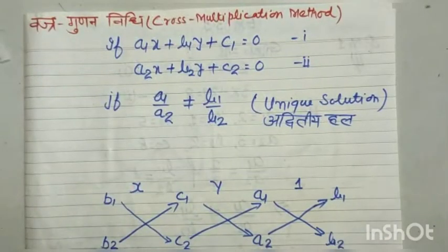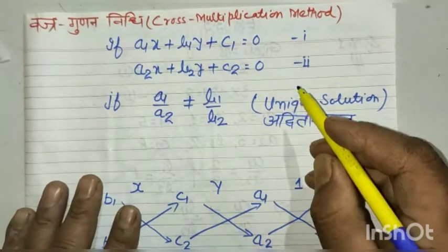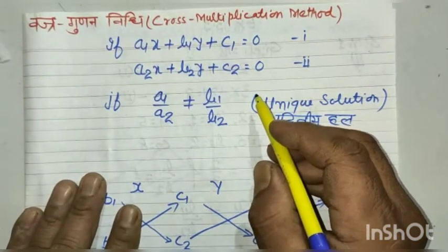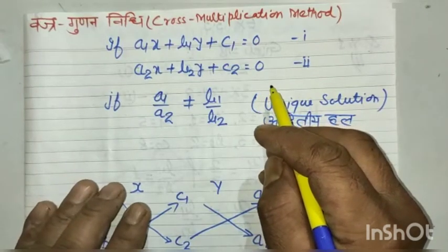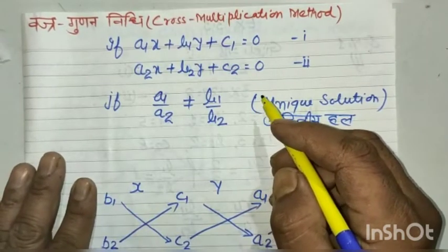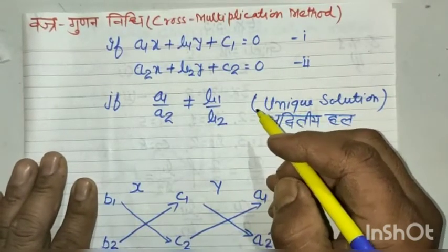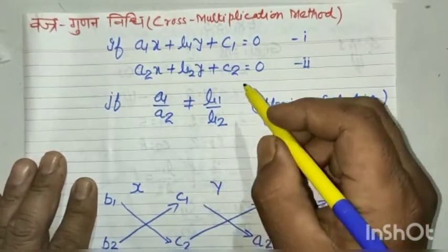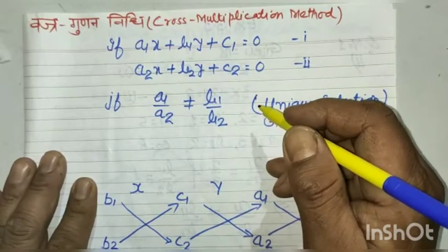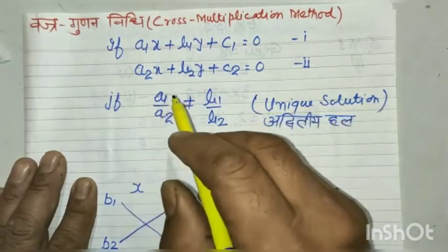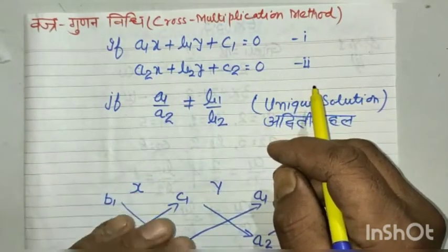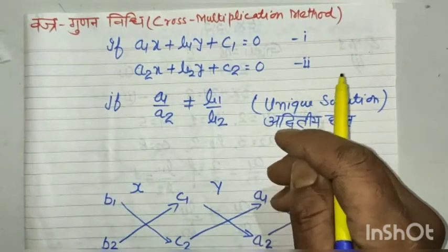We have to learn how to solve the given linear pair of equations by the method of graphical methods, substitution methods, elimination methods, and the method of cross multiplication.